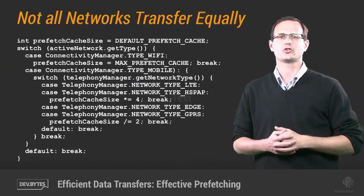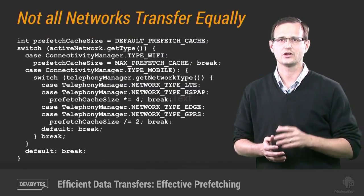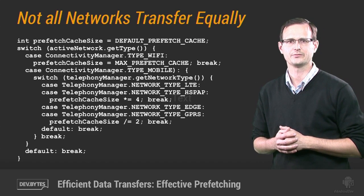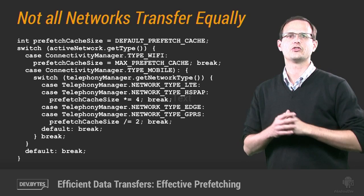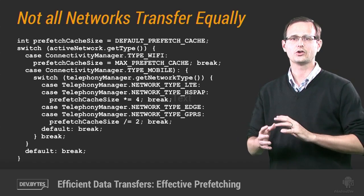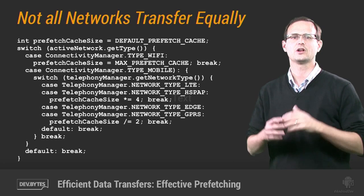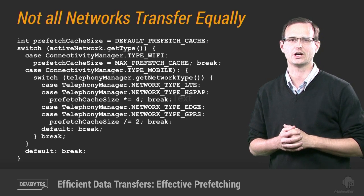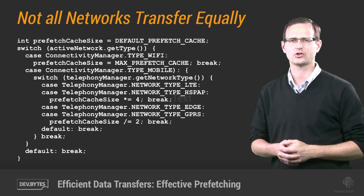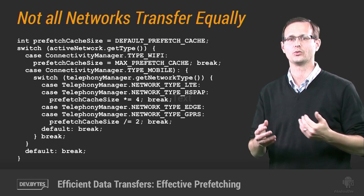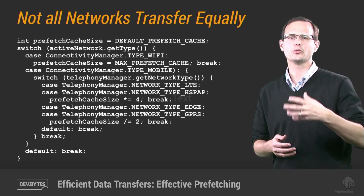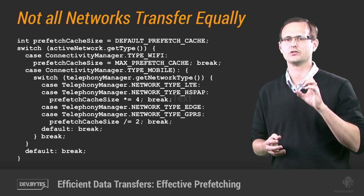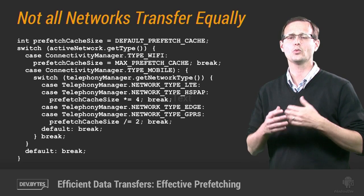Not every network transfers data at the same rate, so the equation will change based on the speed of transfers and the efficiency of the cell radio technology. This code sets a default value for 3G networks and increases or decreases the size of the prefetch cache based on the speed and cost of each network. Note that we want to prefetch significantly more data on faster 4G networks — both to account for the larger amount of data downloadable in the same time period, but also because of the higher battery cost associated with these radios, making it even more important to avoid extra state transitions.